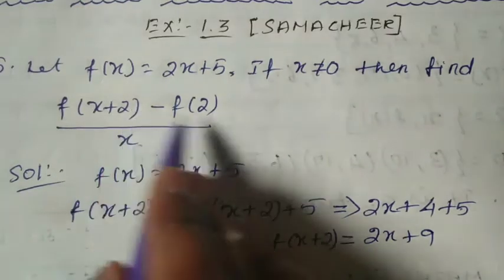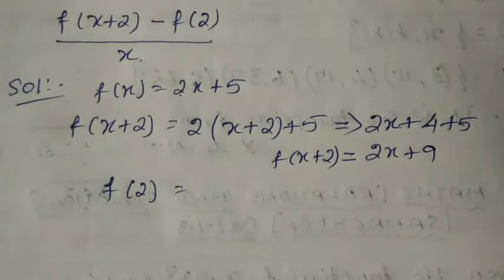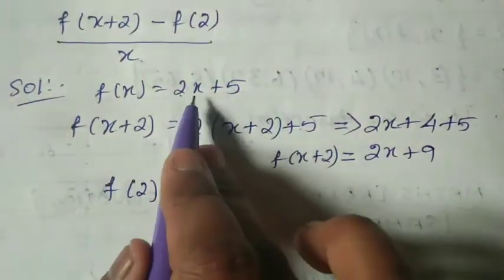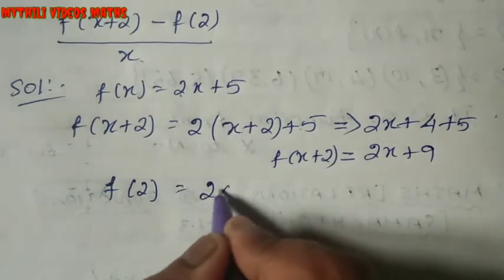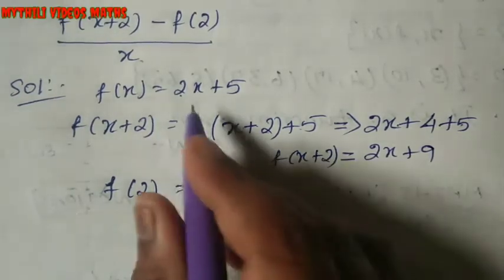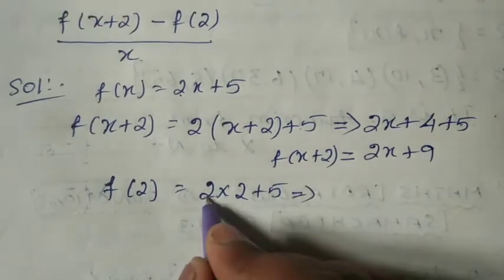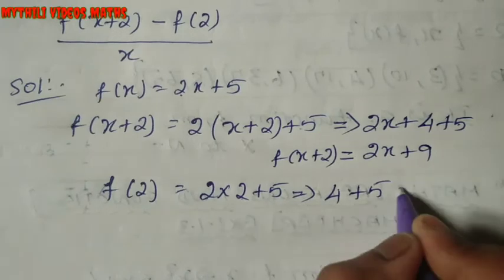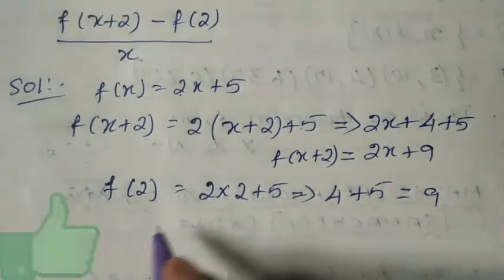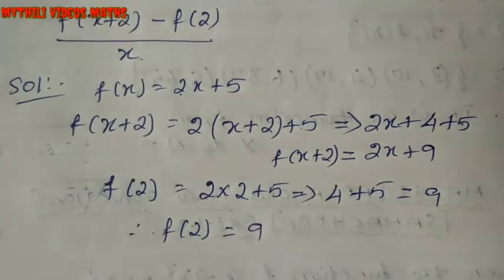Now f(x+2) is done. Next we have to find f(2). In the same function, instead of x we substitute 2. So f(2) = 2 times 2 plus 5. That is 4 plus 5, which equals 9. Therefore f(2) = 9.